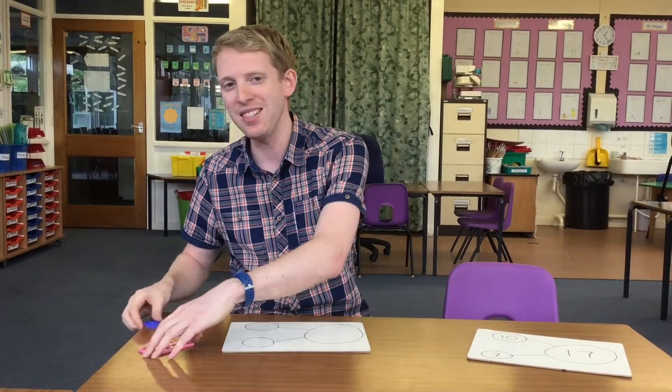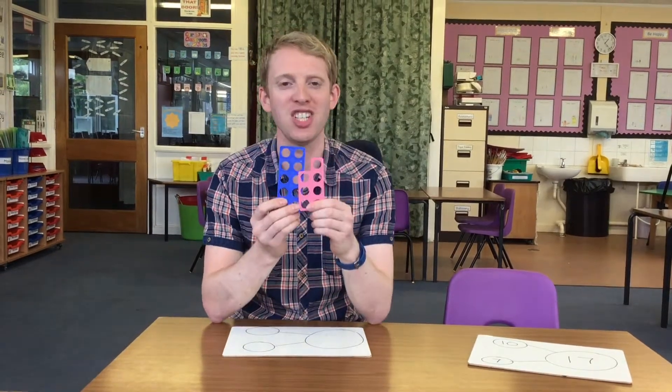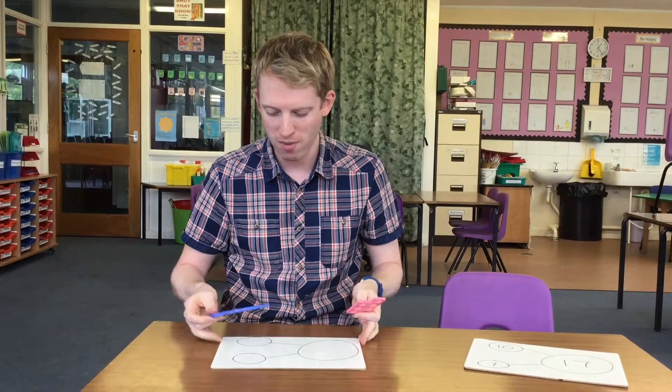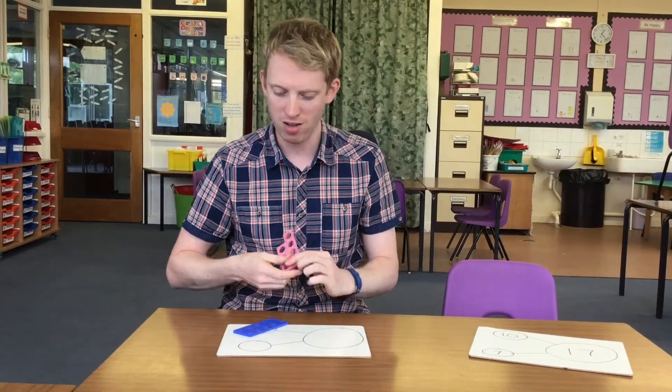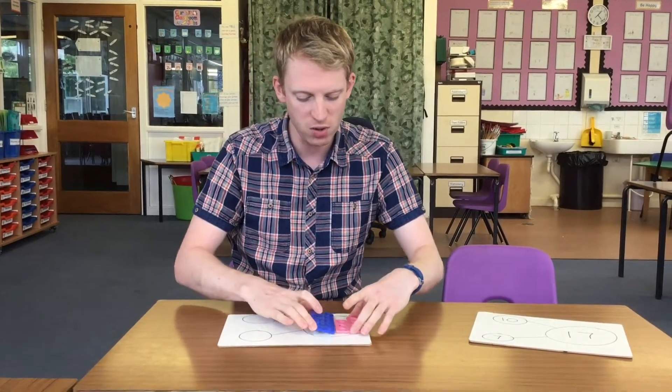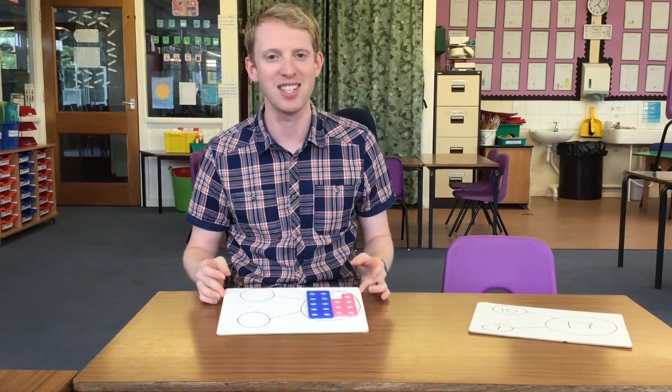So we've got our 17 that we made earlier where we've partitioned it into our 10 and into our 7. What we do is we put one part, the 10 part, and the 7 part in the other part. We get the children to show and try making the whole. So we put the two together to make our 17.